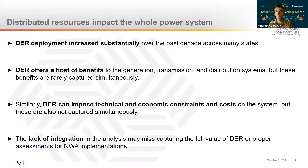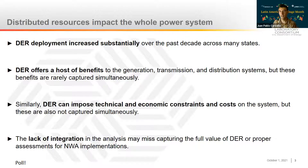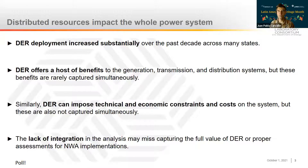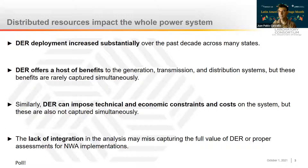Distributed resources adoption or deployment has increased substantially over the past decade among many states, and these resources offer a host of benefits. Those benefits ripple up not only in the distribution system, but up to the transmission and generation domains. However, these benefits are rarely captured simultaneously. The types of analysis we conduct to capture DER benefits are usually limited to a single domain, most typically the distribution system, but the impacts of DER — especially at higher levels of adoption — do encompass the whole system.